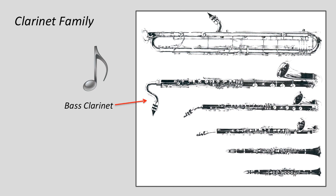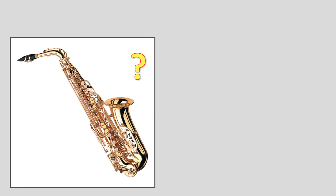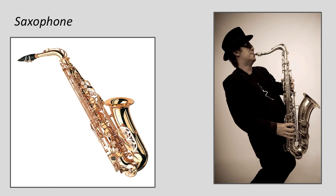You might recall that I mentioned a certain member of the woodwind family that was not made of wood. Do you remember what it was called? Yes, it's the saxophone. The saxophone is a much younger instrument than the rest of the woodwind family — in fact, it was invented in 1840, so that's pretty recent.